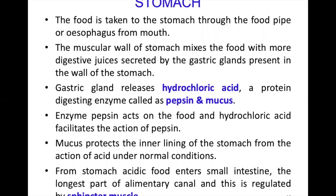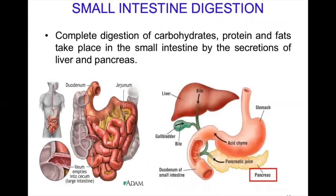Food remains in the stomach for nearly three to six hours and then empties into the small intestine. From the stomach, the acidic food enters the small intestine — the longest part of the alimentary canal — regulated by the sphincter muscle. The stomach is a J-shaped organ, and the digested food from the stomach enters the small intestine, which is nearly six to seven meters long.